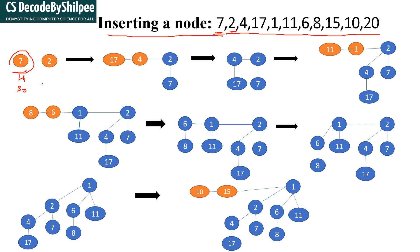Now the next element is 2. I have created a node for 2. Remember that for inserting an element in a binomial heap, we do 2 things: first we create a single-node binomial heap, and then we perform the union operation. Also note that I am working on a min binomial heap, meaning it will follow the min heap property.